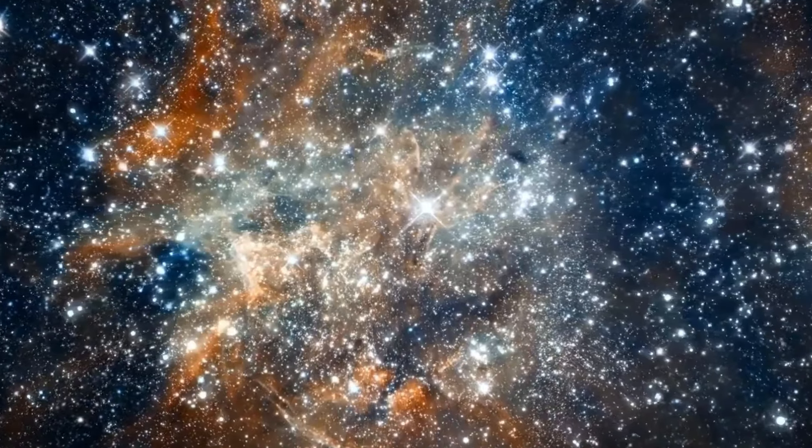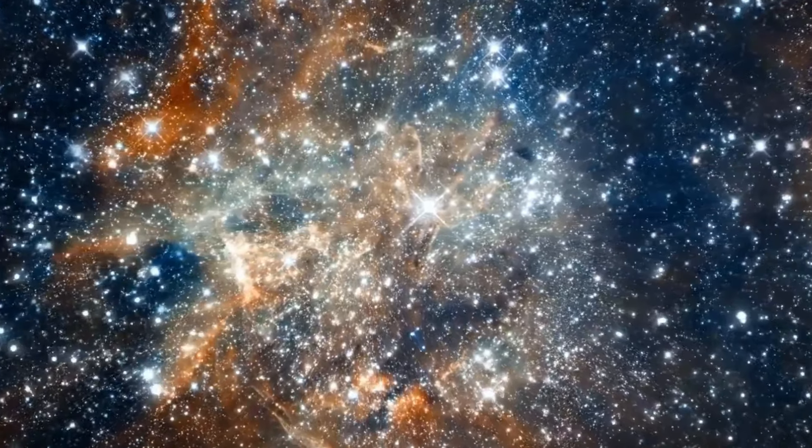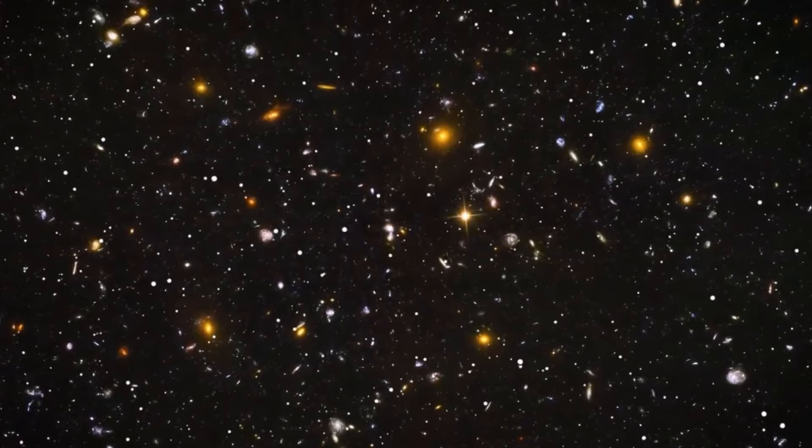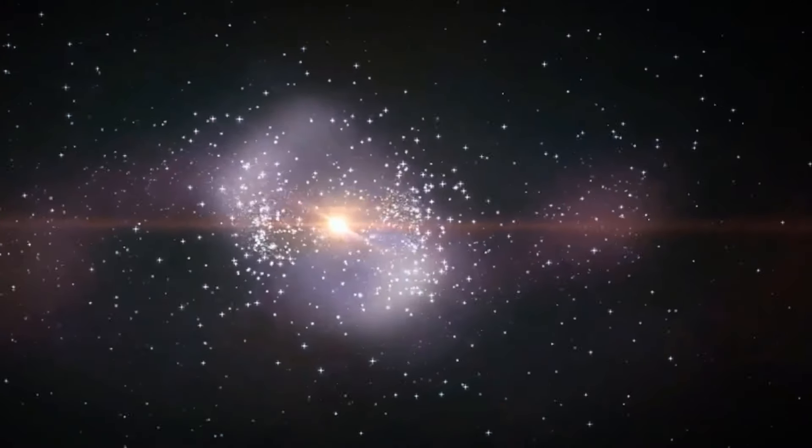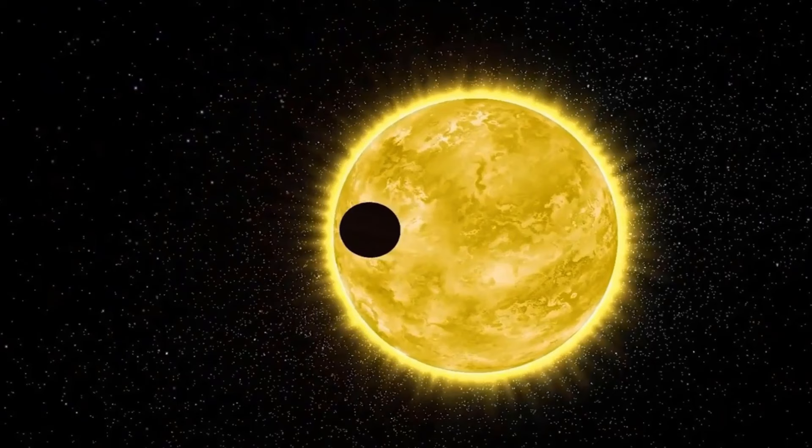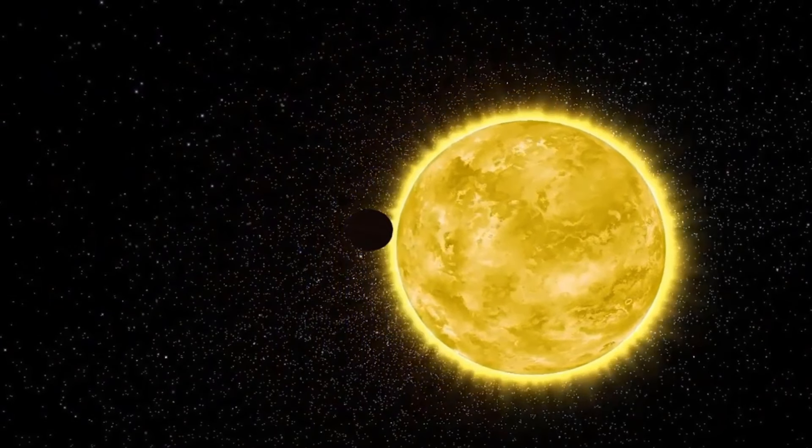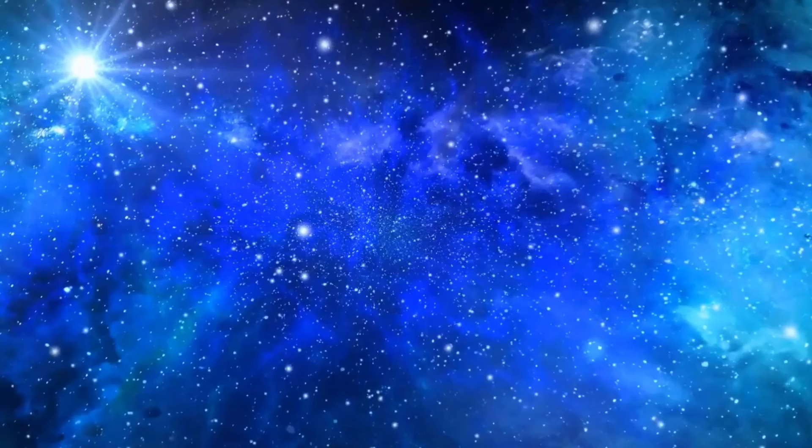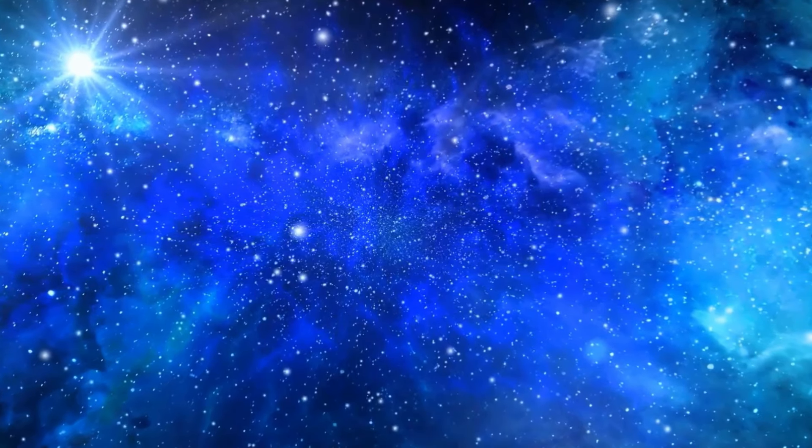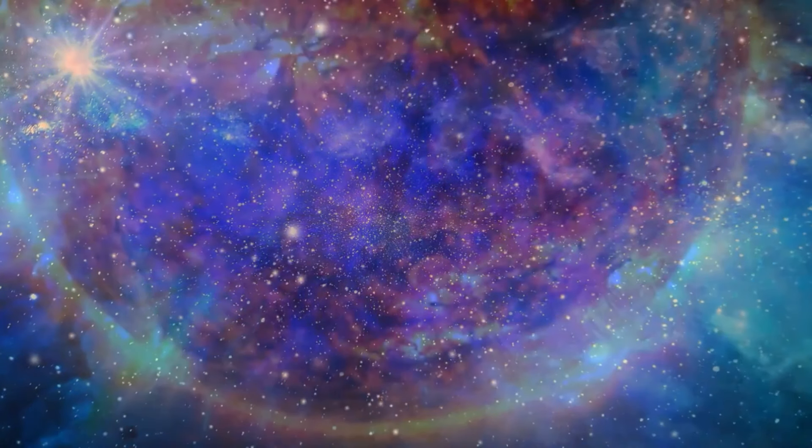But let's put aside thoughts about life and death for a moment, and keep talking about stars, because we still have one more group to analyze. What happens to stars that are a bit bigger than the first ones? Well, to start with, these are stars that have between 11 and 50 times the mass of our sun.